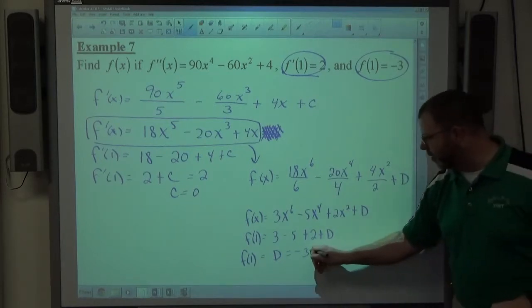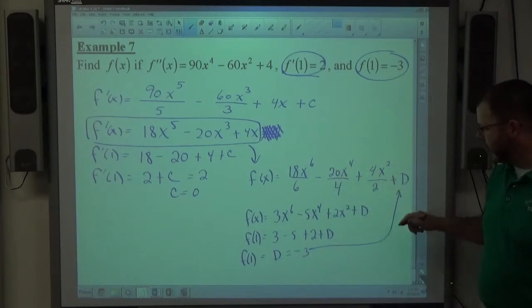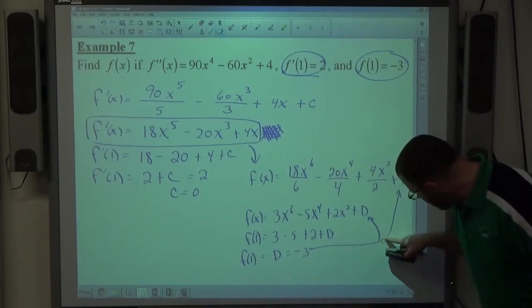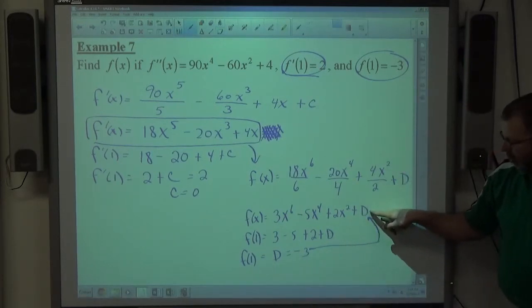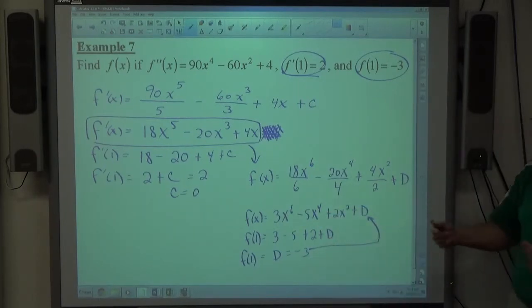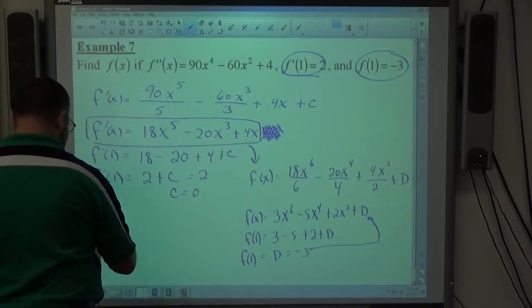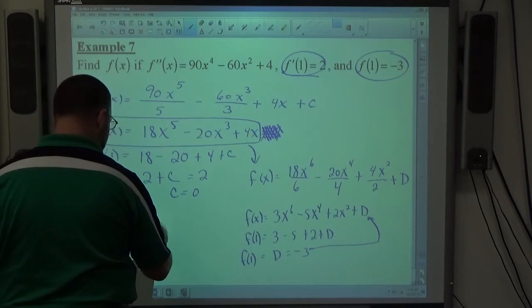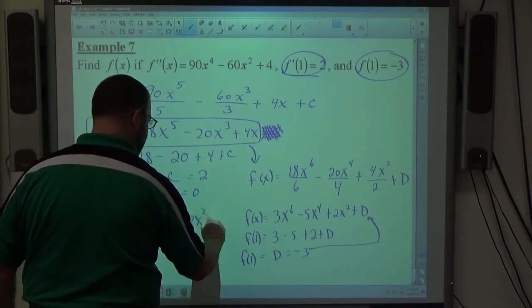And once I know what d equals, that just tells me how to modify this. So f of x equals all this stuff. So actually, let's go there. Take a detour. All right. It tells us what to make this. So there's my function, the plus d, but now d is actually known as negative 3. So we just substitute it in. So the final answer here, f of x equals 3x^6 - 5x^4 + 2x^2 - 3.